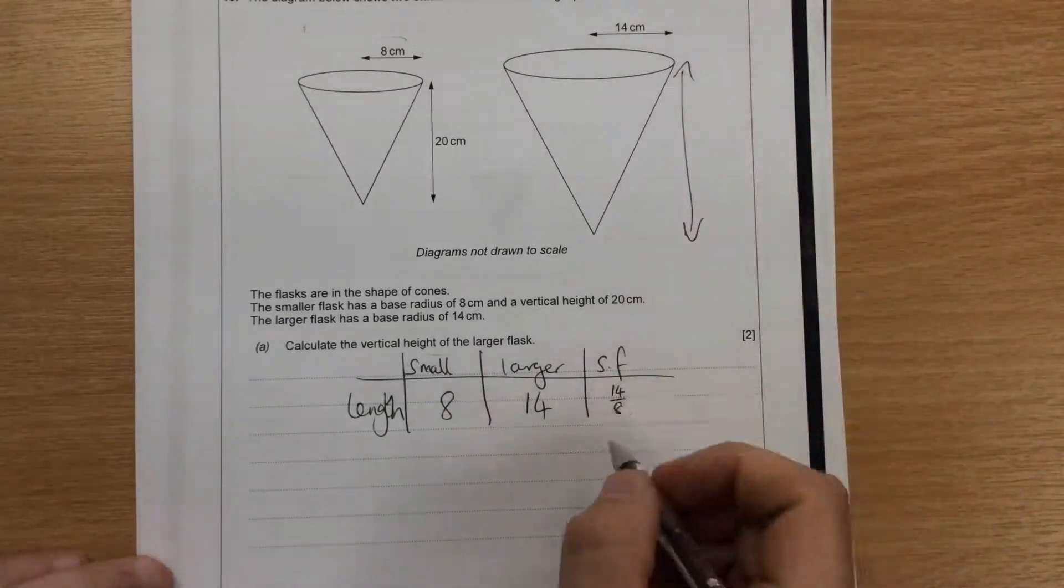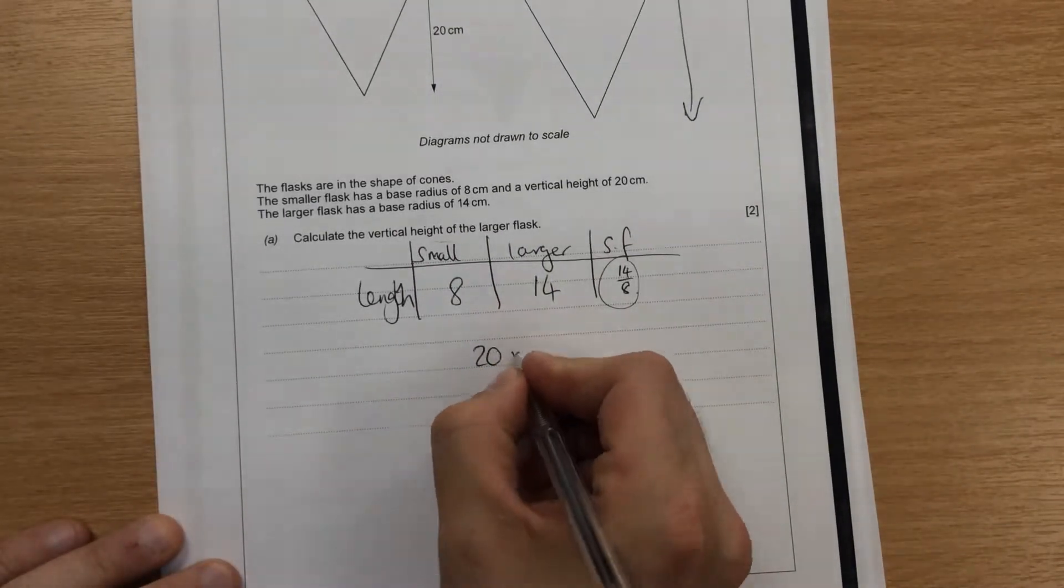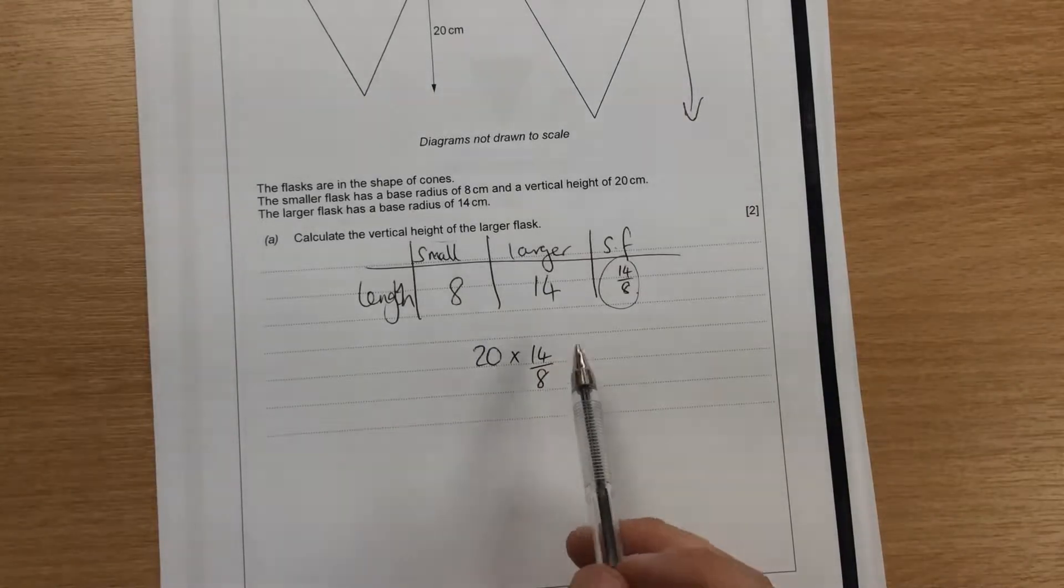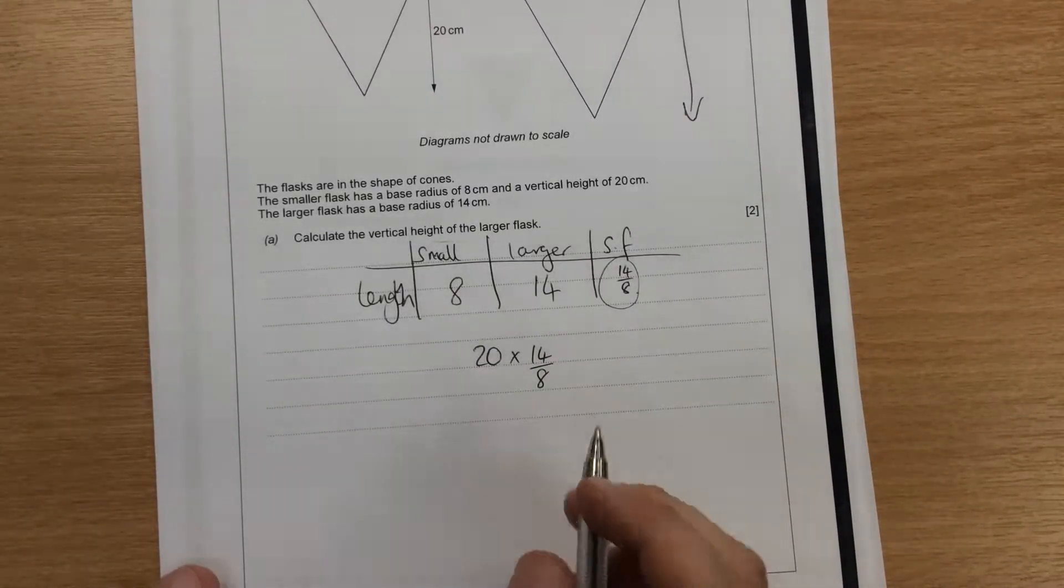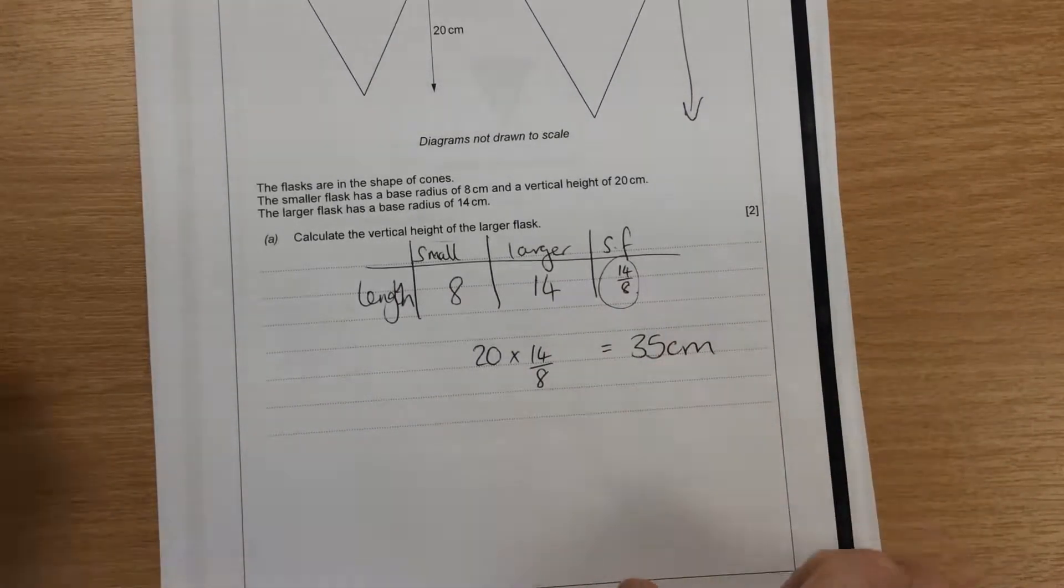If I want to find the height now of the larger one, I'm going to take this length scale factor and times it by 20. So I'm going to end up doing 20 times 14 over 8. Again, I can either do 20 times 14 first and then divide by 8, or I can do 20 divided by 8 first and then times it by 14. It's entirely up to you whichever way you do it, but you'll end up with the answer of 35 centimetres.